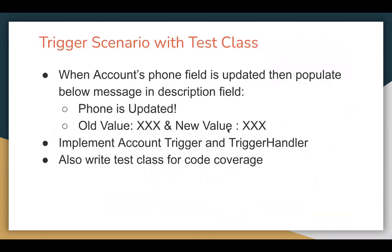Let's understand the trigger scenario first. When the account's phone field is updated, we need to populate a message in the description field. This scenario will be based on the update operation. We need to put the message like 'phone is updated, old value is this, and new value is this.' We need to implement an account trigger and trigger handler, and also write its test class for code coverage.